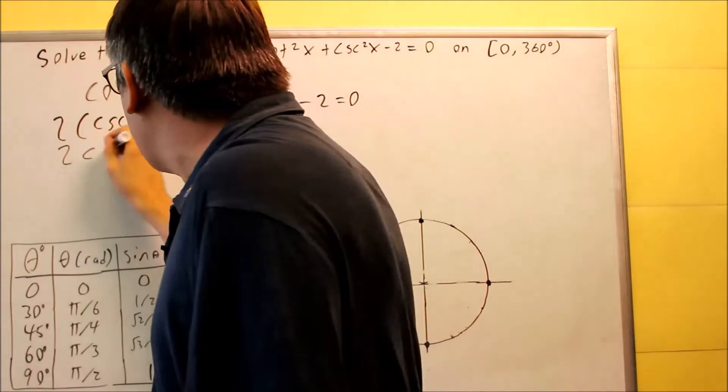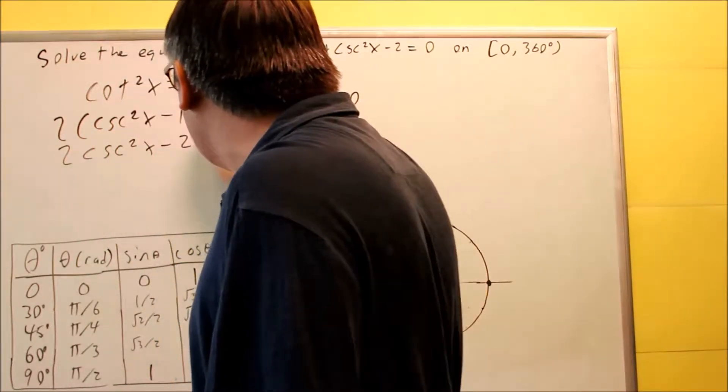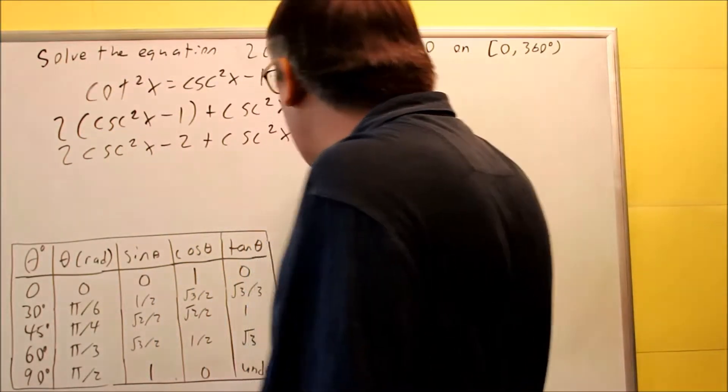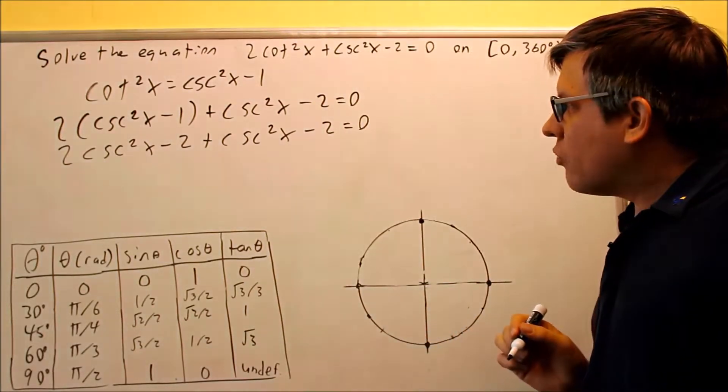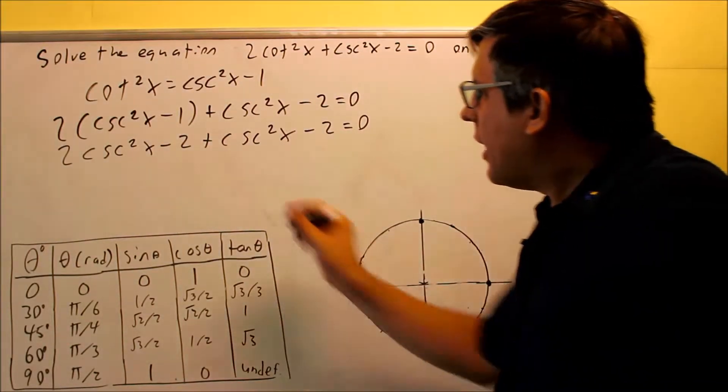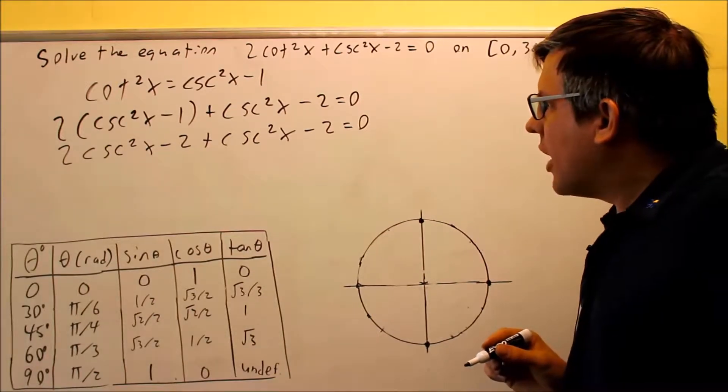Let's multiply by 2, 2 cosecant squared x minus 2 and then I have this. So when I take that one I have minus 2 here and I have another minus 2 over there on that side.